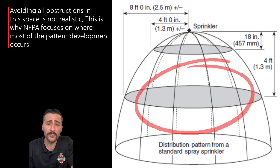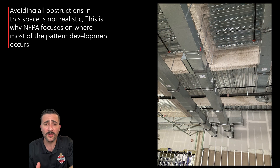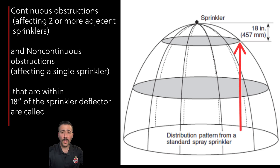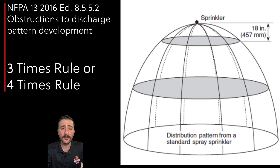If you're in the business, you know there's always going to be pipes, conduit, ductwork, and structural steel underneath our sprinkler heads. This is why NFPA focuses on where most of the pattern development occurs. Continuous obstructions affecting two or more adjacent sprinklers, and non-continuous obstructions affecting only a single sprinkler that are within 18 inches of the deflector, are called Obstructions to Discharge Pattern Development.